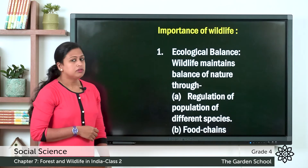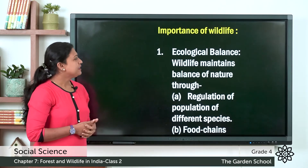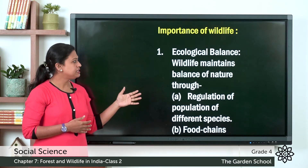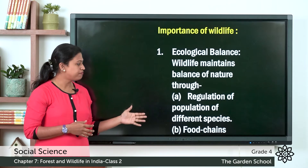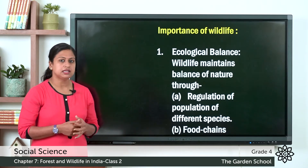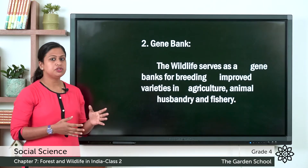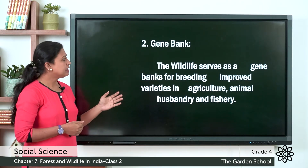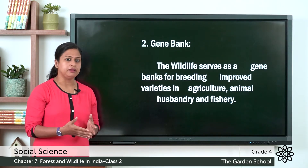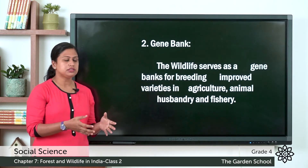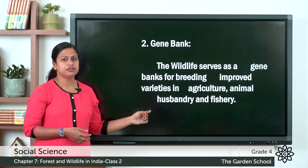Now let's see the importance of wildlife. Wildlife maintains the balance of nature through regulation of population of different species and food chain. Next one is gene bank — the wildlife serves as gene bank for breeding and these are used in agriculture, animal husbandry and fishery.